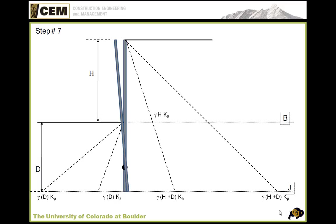That's where things get a little bit complicated. Above our point of excavation, from depth H and above on our retained side, we know we have all active pressure. And below the point of the excavation, in this depth D from the bottom of the excavation all the way to the tip of the pile where we've driven it, we're going to have a balance between active and passive pressure. So we need to compute the force balance here and understand where these forces are going to be applied.